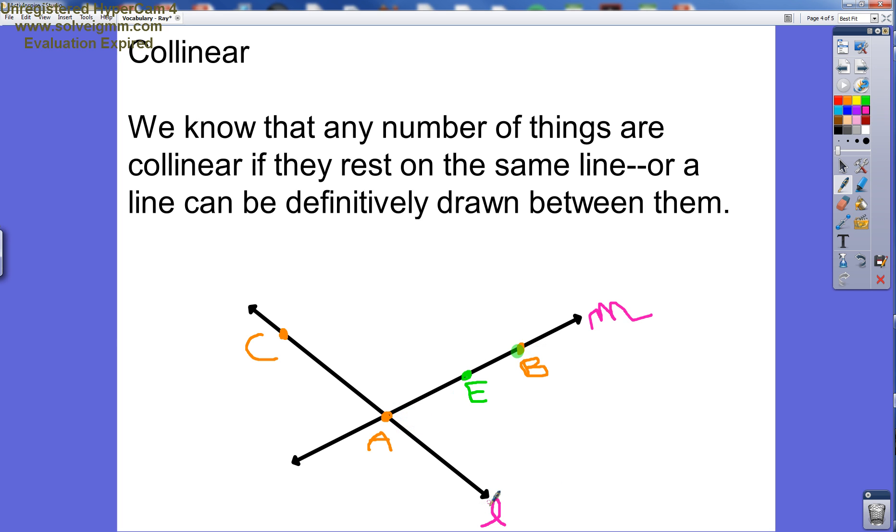Likewise, on line L, we see that there's point A and point C. So we could say that point A and point C are collinear because they're both on line L.